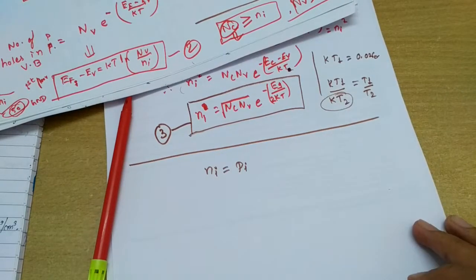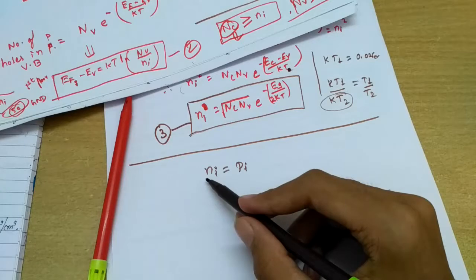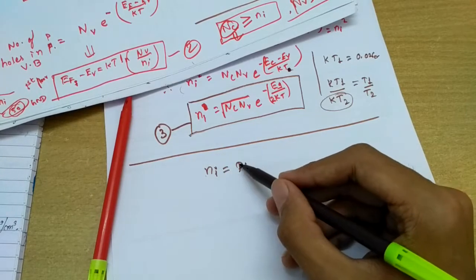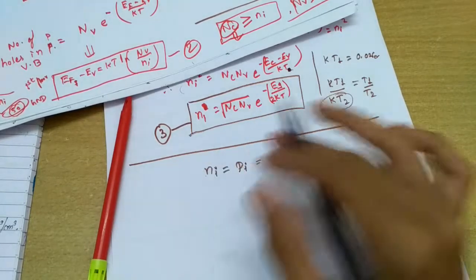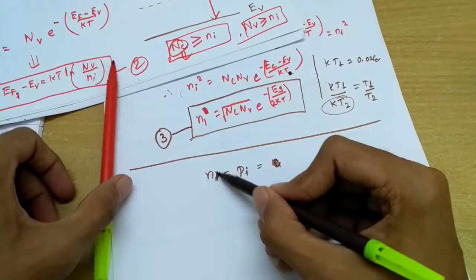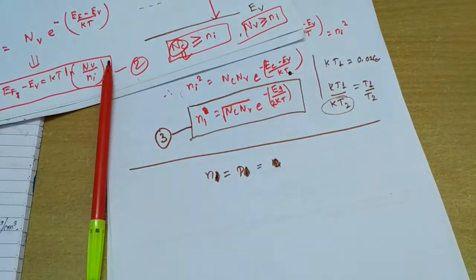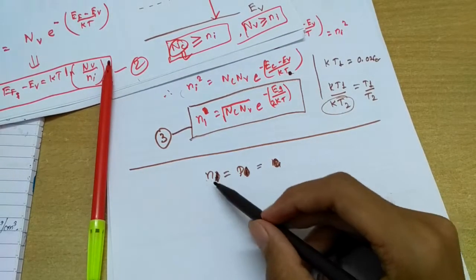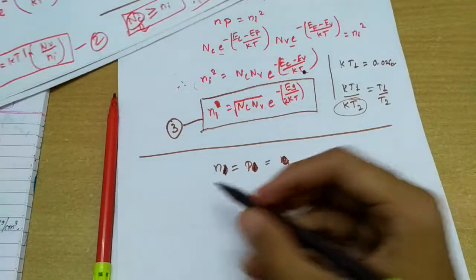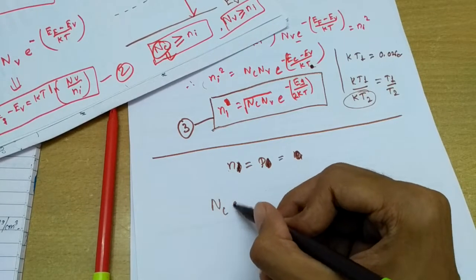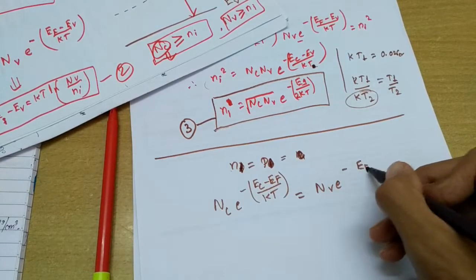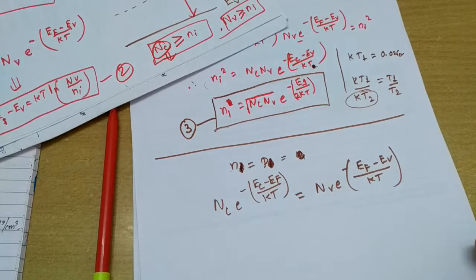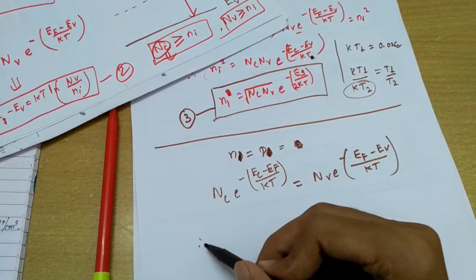To find the position of efi, we use ni = pi, meaning the number of electrons equals the number of holes in an intrinsic semiconductor, both equal to ni. We equate the two expressions: nc·e^(-(Ec - Ef)/kT) = nv·e^(-(Ef - Ev)/kT).